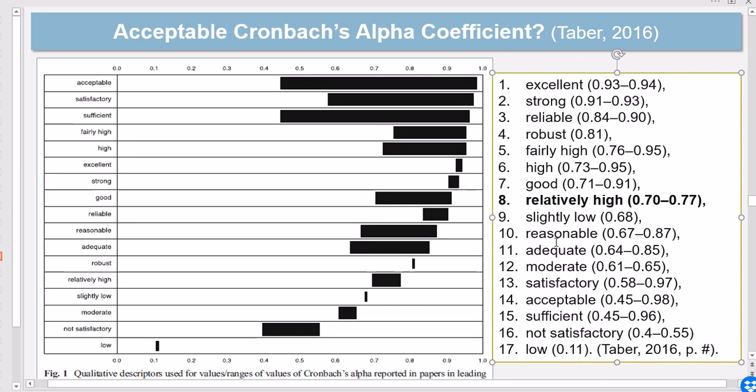Now you can go up and look into the rest of this hierarchy of ranges of Cronbach's alpha. But then we have something right in between, something like a median, really, of this range. And that's relatively high, which has been interpreted as something that falls between 0.7 to 0.77.